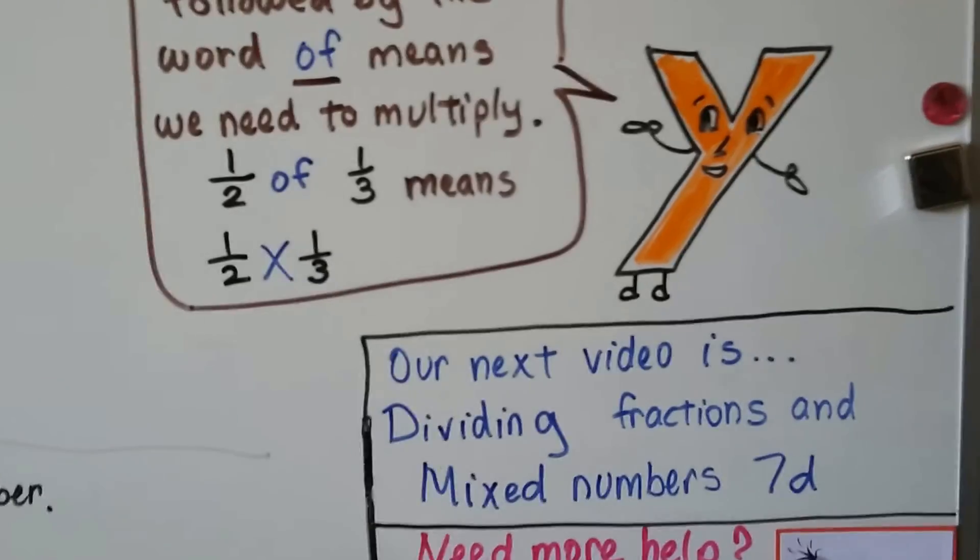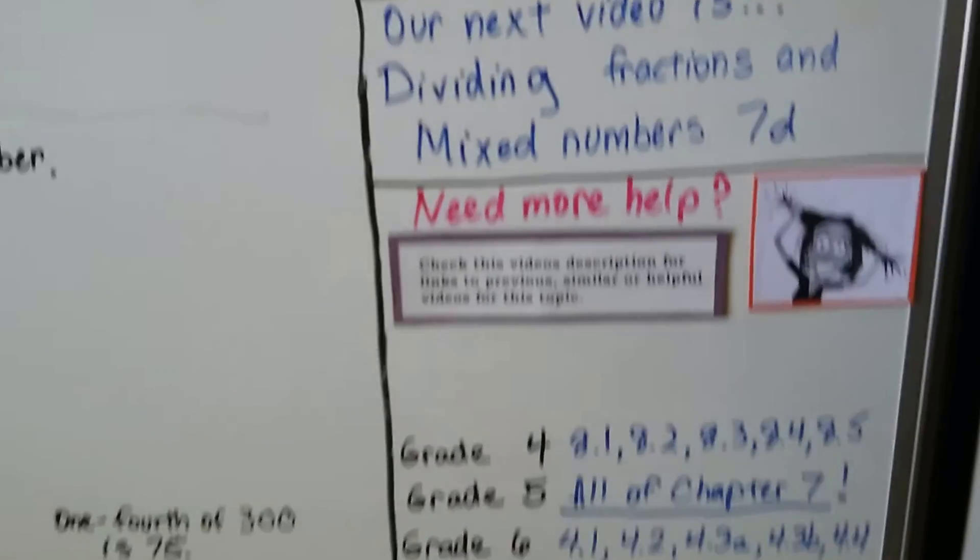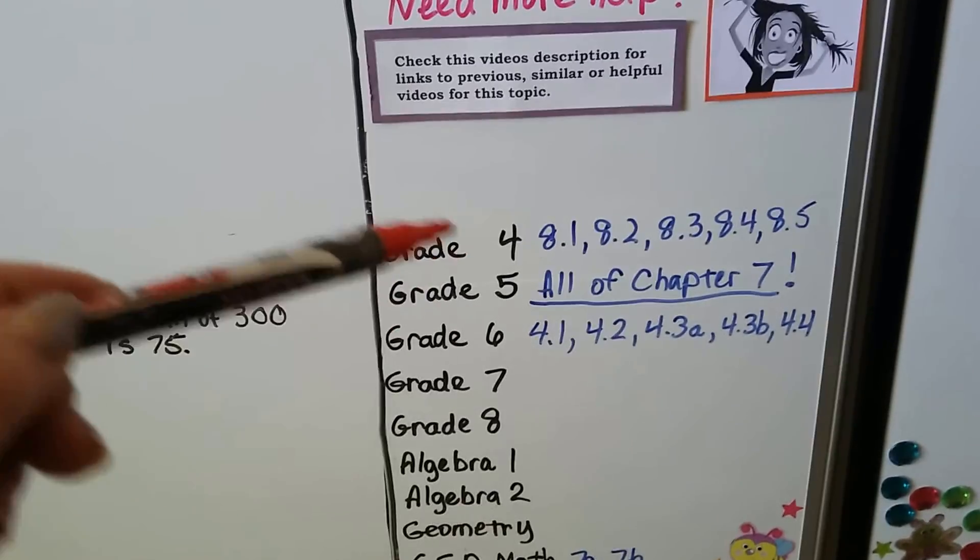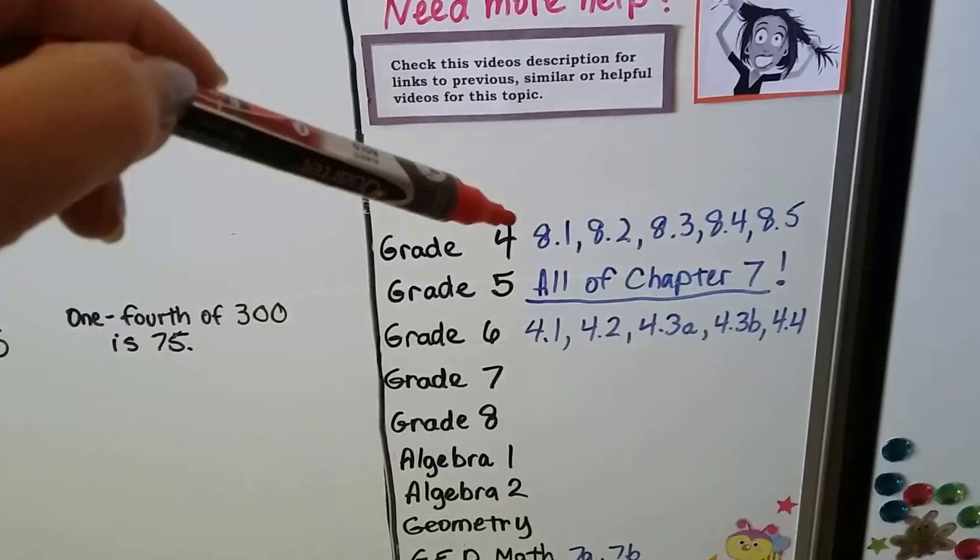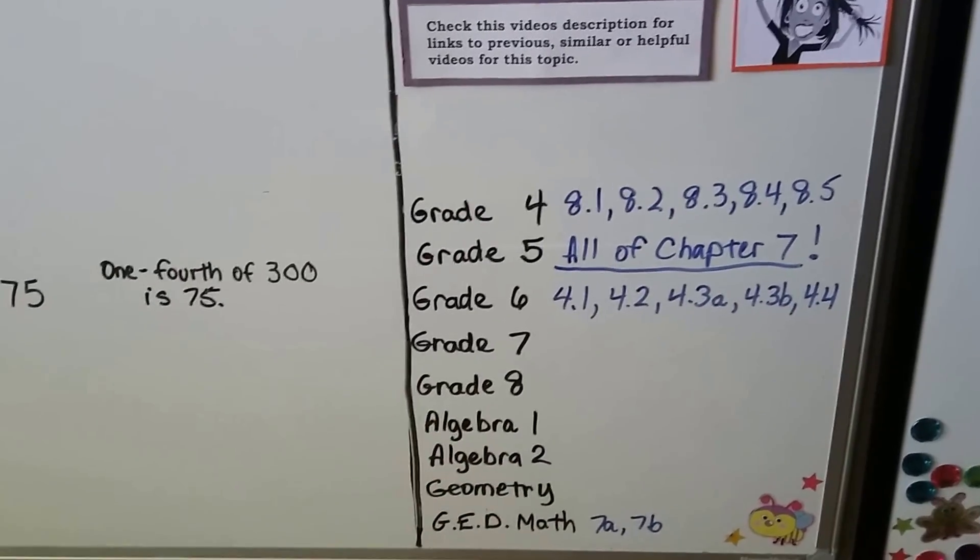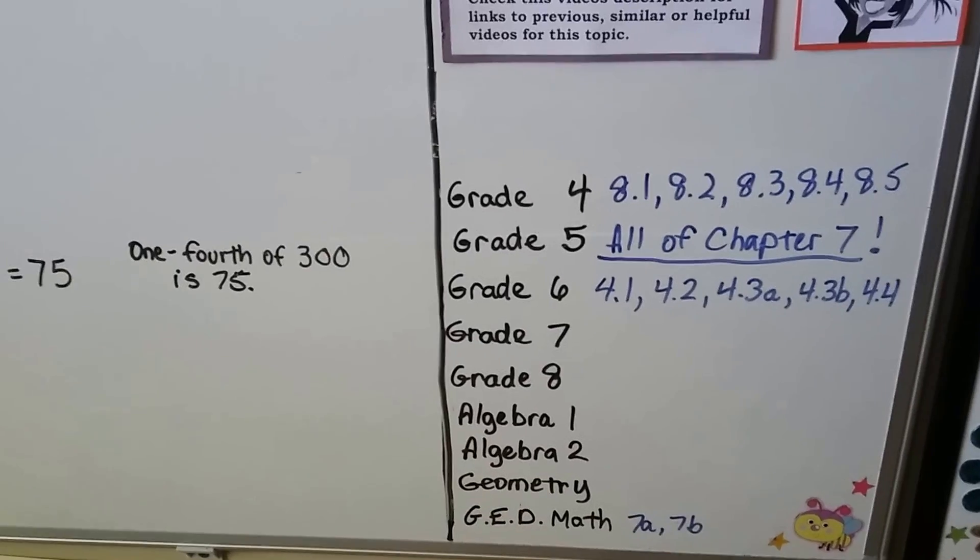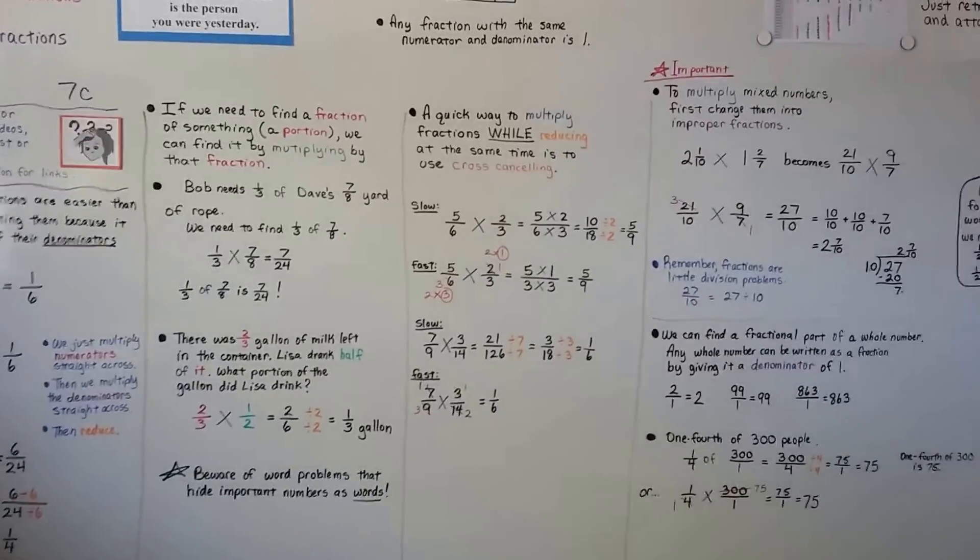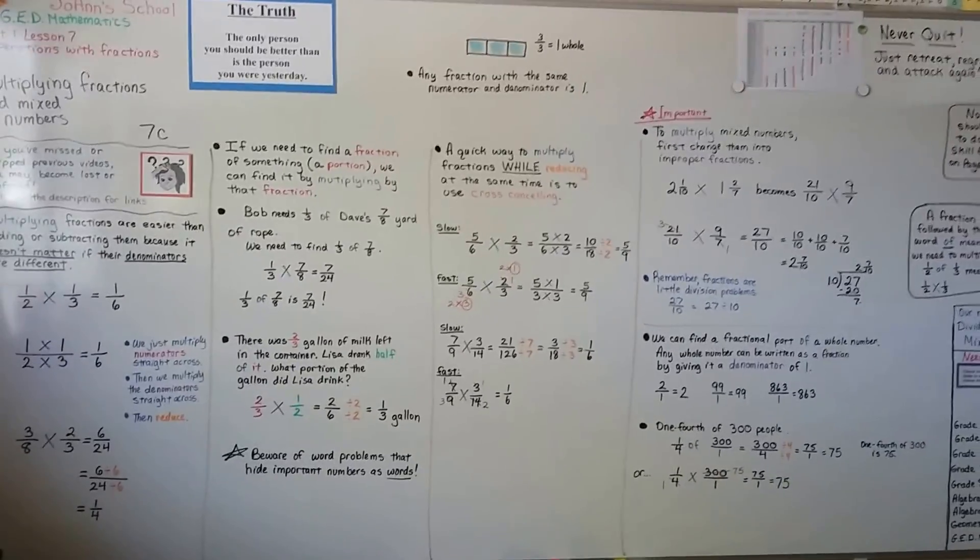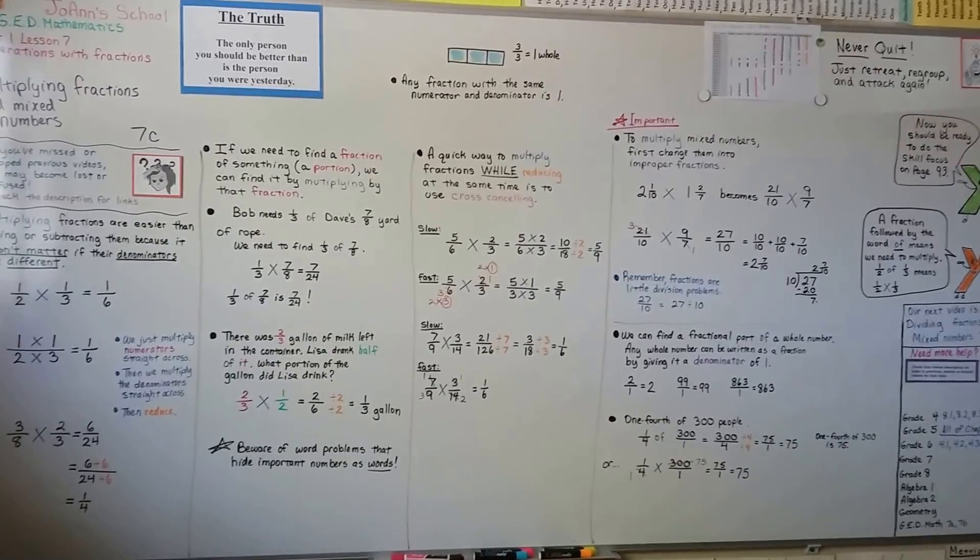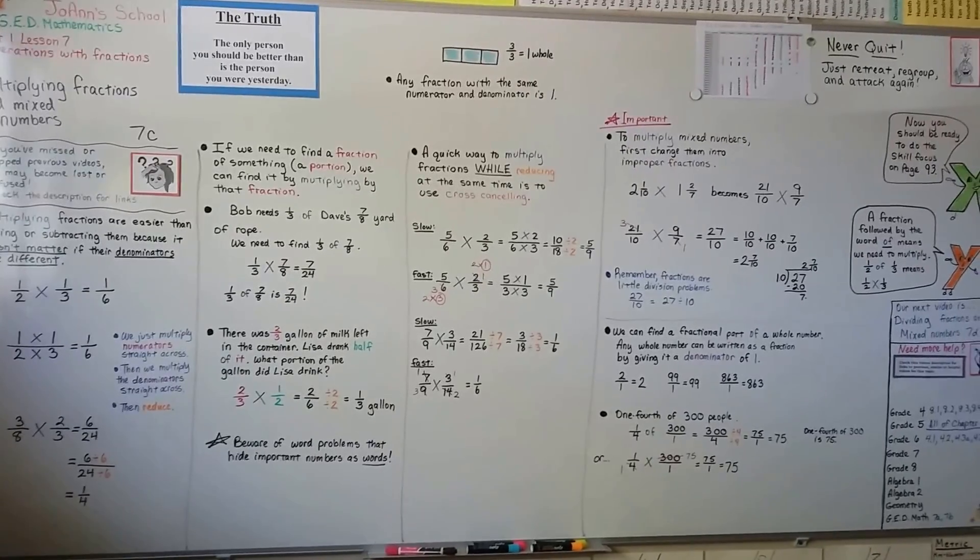Our next video is going to be dividing fractions and mixed numbers. So make sure you understand this before you move on to the next lesson. If you need more help, there's lots of links in this description. All of chapter seven for grade five is going to be helpful. But these grade four math videos are going to be helpful. They're all about multiplying fractions. And these grade six math videos are all about multiplying fractions. And I'll have the previous ones for this lesson, 7a and 7b, linked in there too. So now that we're getting into these fractions, now it's very important that you take your time and go slowly and make sure you understand each lesson before you proceed. Because you don't want to become frustrated and get in over your head. Good luck on that skill focus. And I'll see you next lesson. Bye.